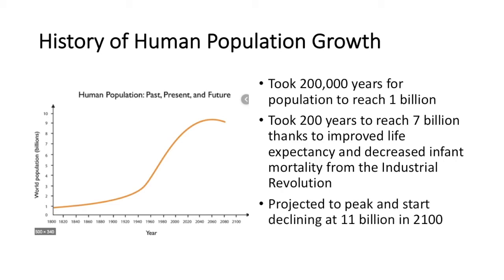We are projected to peak at 11 billion in the year 2100, and from there we would see a decline in the human population. But this is overall just one picture of the history of the growth of our human population on Earth.